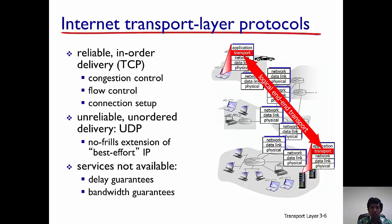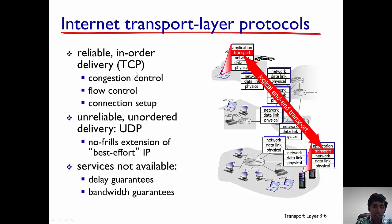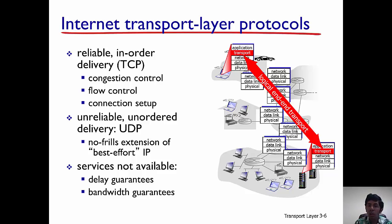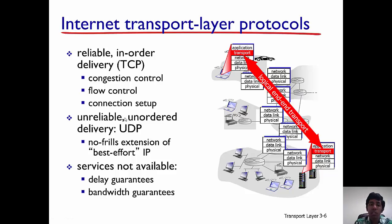The internet transport layer has two protocols. TCP provides congestion control, flow control, and is a reliable data transfer protocol. The other one is UDP, which is unreliable as well as unordered. We study both because UDP is simple and unreliable, while TCP is reliable. This helps us understand the amount of complexity needed to go from an unreliable protocol to a reliable, in-order delivery protocol like TCP.